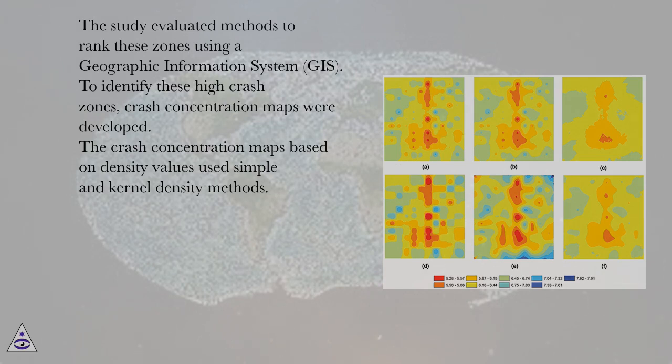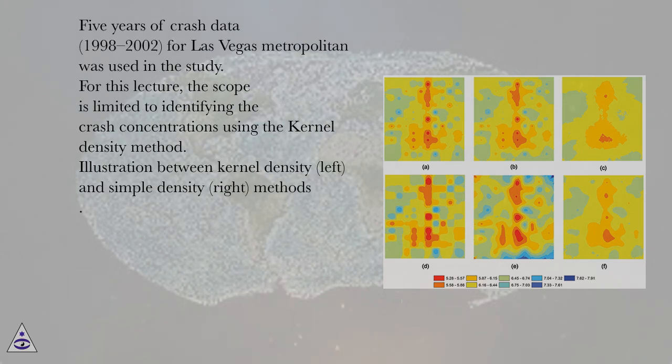The crash concentration maps based on density values use simple and kernel density methods. Five years of crash data, 1998-2002, for Las Vegas Metropolitan was used in the study. For this lecture, the scope is limited to identifying the crash concentrations using the kernel density method.